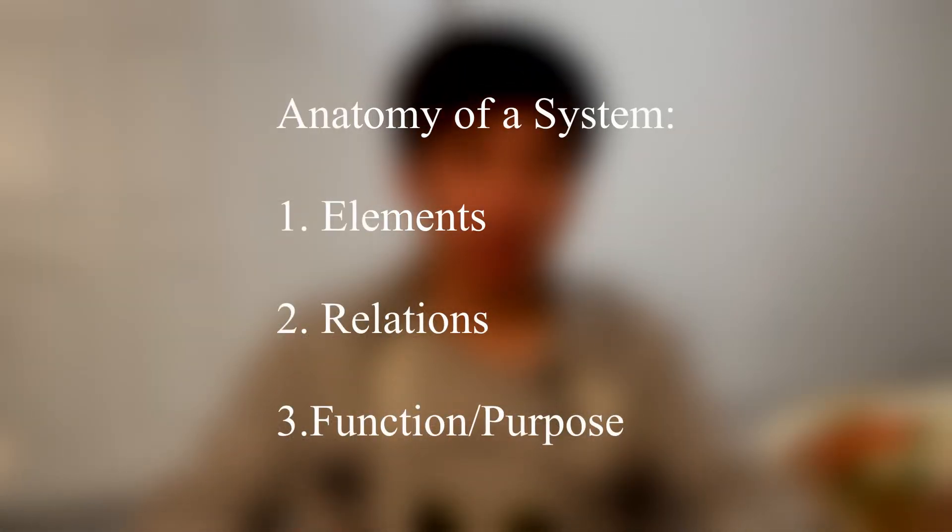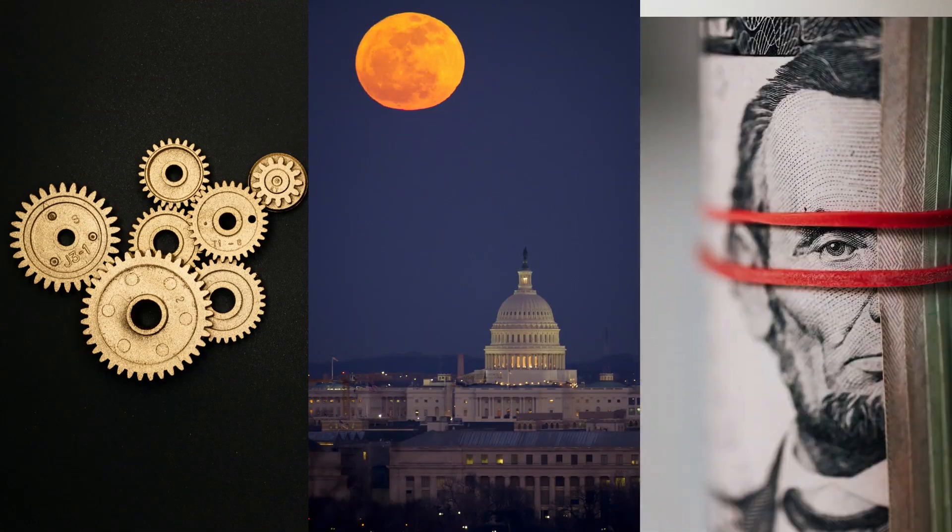Once we understand the difference between systems and sets, we can take a closer look at how systems work. The anatomy of a system is composed of three things: elements, relations, and function or purpose. Elements are simply parts within a system — these could be physical like gears, or institutions like the U.S. federal government, or ideas like capitalism. Relations point to the connections or interactions between elements. The key differences between a set and a system are in how these elements are related to each other.